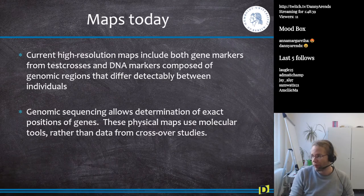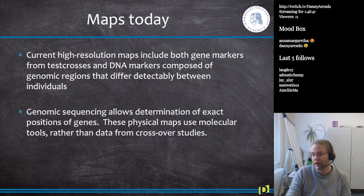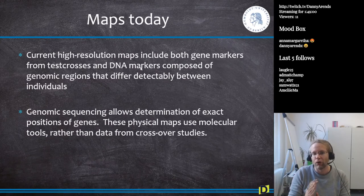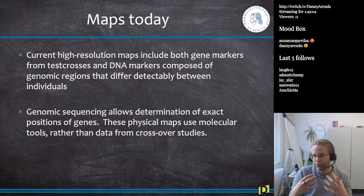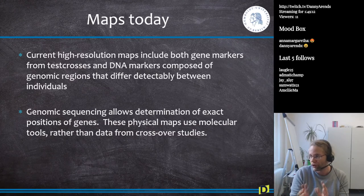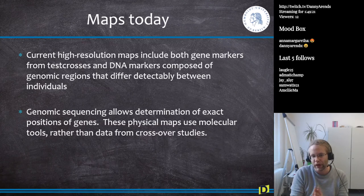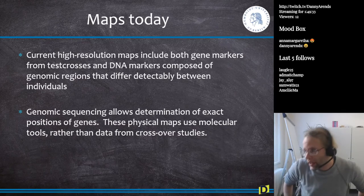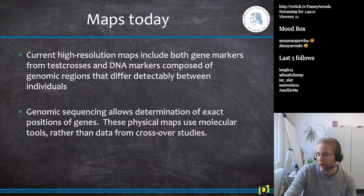Today we have high-resolution maps which include both genetic markers from test crosses — sepia eyes and hairy body are still genetic markers in the Drosophila map — and we have complemented this with DNA markers. DNA technology using PCR or sequencing allows us to determine SNPs or other things in the genome to distinguish individuals. Genomic sequencing allows us to determine exact positions of genes, and physical maps use molecular tools rather than data from crossover studies. Nowadays we have SNP chips where we genotype 50,000 positions in the genome, but the whole theory of genetics was developed way before we knew anything about how DNA worked.